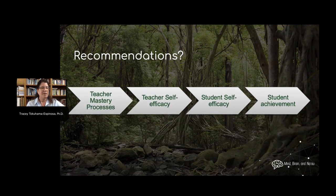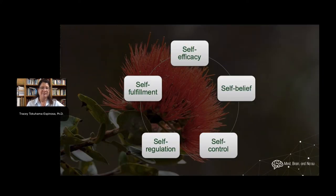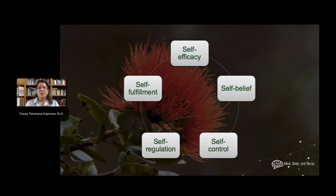The basic recommendation is that if teachers use mastery processes as opposed to performance standards, and if teachers themselves have a high level of self-efficacy, that can turn into student self-efficacy, which turns into student achievement. When we get together, I'm going to ask you to think about this combination: how is self-efficacy related to self-belief? How is that related to self-control or self-regulation? And how does that lead to self-fulfilling prophecies or self-perceptions that we have of ourselves?